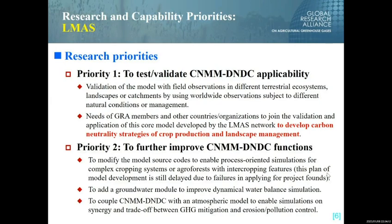The second priority is to further improve the model's functions, including further modifying the model source code to enable process-oriented simulations for complex cropping systems or agroforestry. This plan is still delayed due to our failures in obtaining project funds. This priority also includes adding a groundwater module to improve the model's dynamical water balance simulation, and coupling this model with an atmospheric model to enable simulations of synergies and trade-offs between greenhouse gas mitigation and erosion or pollution control.